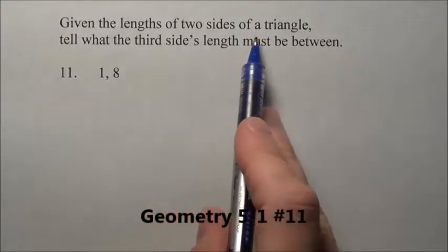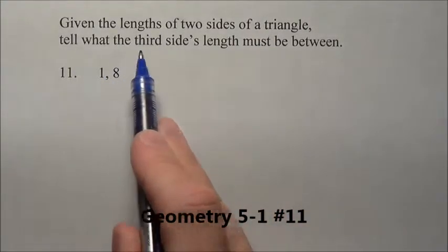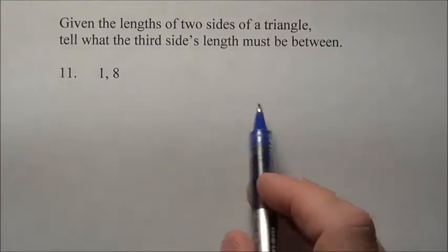Here's 11. It says, given the lengths of two sides of a triangle, 1 and 8, tell what the third side's length must be between.